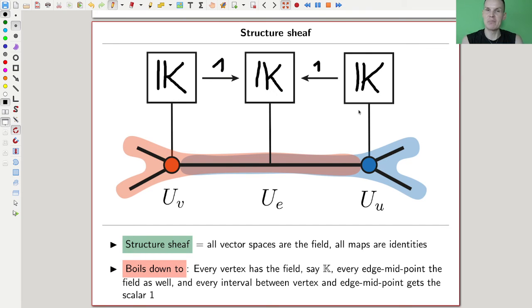For example, there will be something that people call a structure sheaf. Sounds very fancy, but, well, it's just the easiest thing you can associate to a graph in this case. So what would be the easiest thing you can associate to a graph? Well, everything needs a vector space, so why not take the boring vector space, the one dimensional vector space? It's the easiest vector space I can imagine. I mean, there's a zero vector space, but that's too stupid. So this is the one dimensional one for everything.